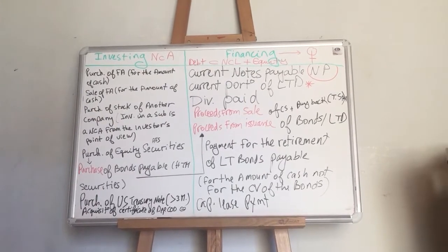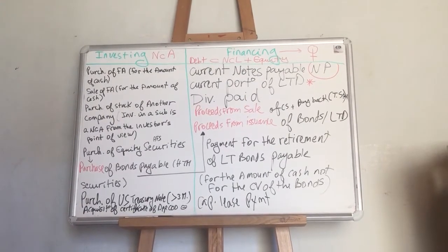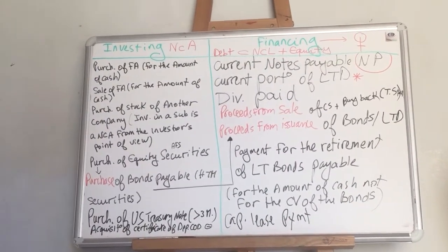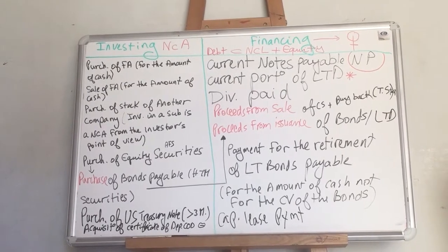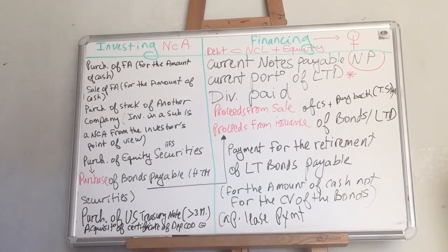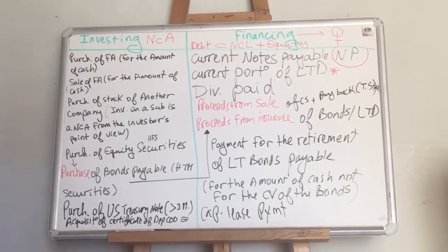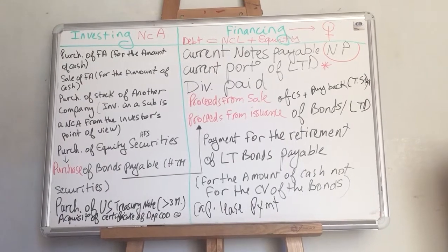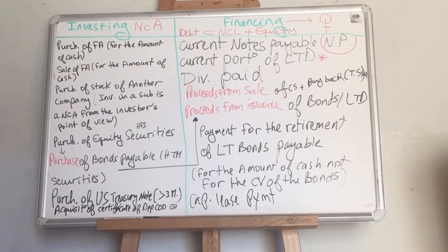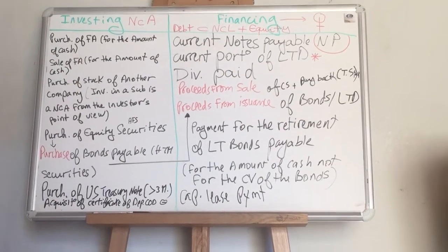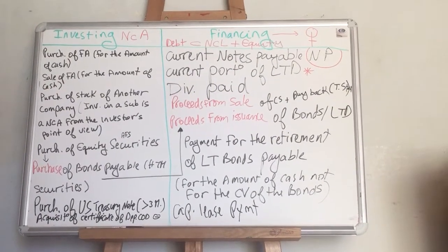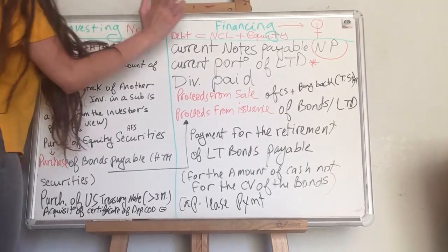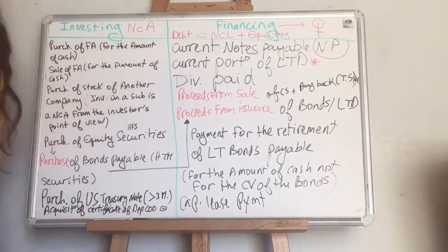First, I would like to tell you that you can make your own flashcards. This is a good comparison between the investing and the financing section. You can write it down on a piece of paper and review it the day of the exam. Just read your notes. What is reported under the investing section and what is reported under the financing section?